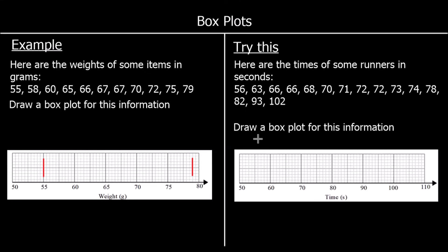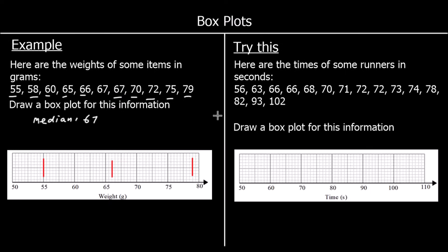We need to work out the median and the quartiles. The median is the middle number. We've got 11 numbers here, 11 items. So the middle one is going to be the sixth one. We can cross off five on both sides, and we're left with the median, which is 67. So a box plot has a line for the median, and we draw that at 67.